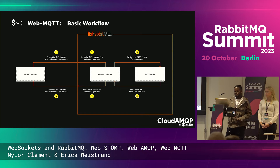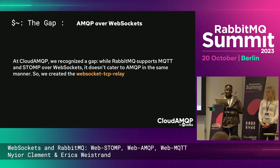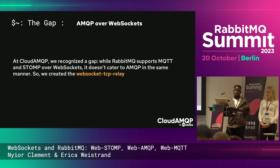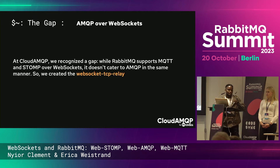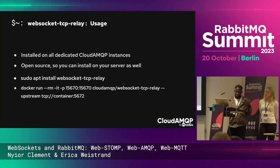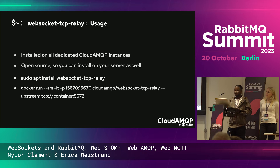But there's a gap. At CloudAMQP, we recognized that while RabbitMQ supports MQTT and STOMP over WebSocket, it doesn't cater for AMQP in the same manner. So we created the WebSocket TCP relay. Traditionally at CloudAMQP, we've used it to enable AMQP over WebSocket — it comes with all our dedicated instances. It's also open-sourced, so if you search for 'WebSocket TCP relay' on GitHub you can find it, and you can install it on your server or run it in Docker.